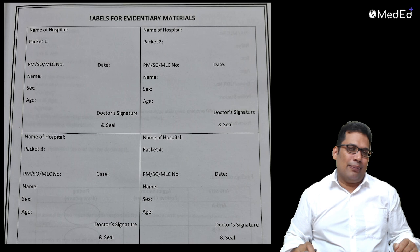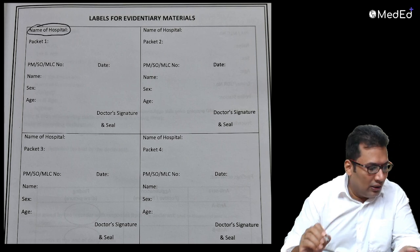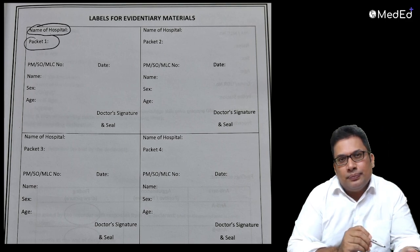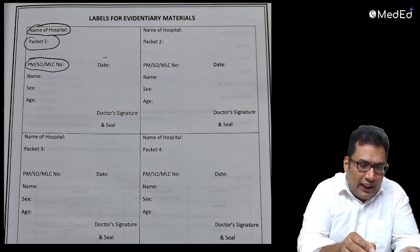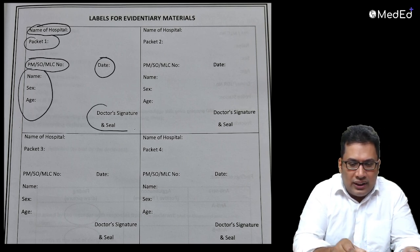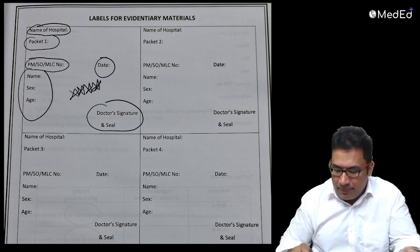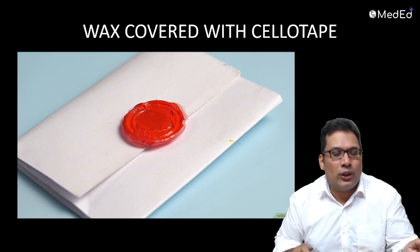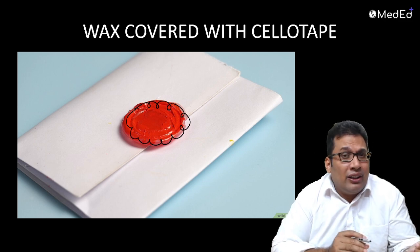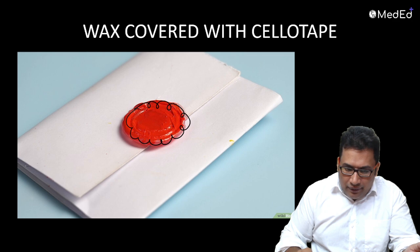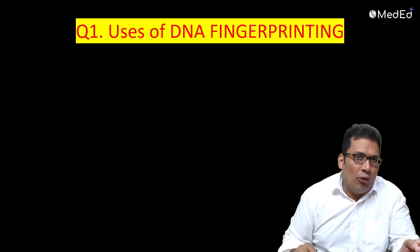This is the labeling of evidentiary material - not only for DNA, but also for other evidentiary materials. The name of the hospital should be on the evidentiary material, the packet number and sample number, PM or SO (sexual offense) number, MLC number, date, name, age, sex, doctor signature and the seal. The seal is normally wax covered with cello tape - this is how we seal it, to maintain chain of custody and prevent contamination. This is the vacutainer - purple vacutainer for collection of blood. Nowadays we use the FTA card, Whatman FTA card.